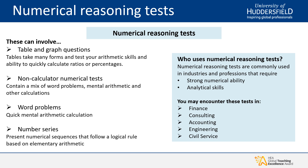Starting with numerical reasoning tests in more detail. These typically involve table and graph questions — you're provided with a table and/or a graph with a data set and asked questions that challenge your understanding and interpretation of that data. This puts your arithmetic skills to the test and challenges your ability to quickly calculate ratios and percentages within a time frame. You may also get non-calculated numerical tests containing word problems and mental arithmetic, or a number series where you're presented with a numerical sequence following a logical rule based on elementary arithmetic.